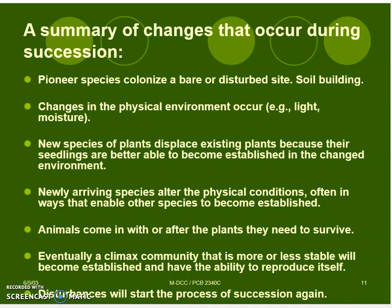Animals come in with or after the plants they need to survive. Eventually, a climax community that is more or less stable will become established and have the ability to reproduce itself. Disturbances will start the process of succession again.